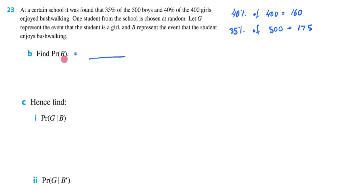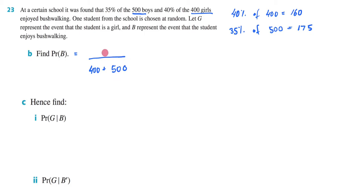Because we're figuring out how many students enjoy bushwalking, we're considering the entire population of the school, which is 500 boys plus 400 girls. So 400 girls plus 500 boys is going to be my denominator. My numerator is going to be my favourable outcomes — what I'm actually after — which is the people who enjoy bushwalking.